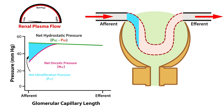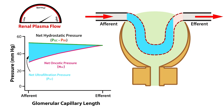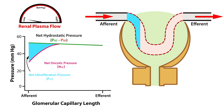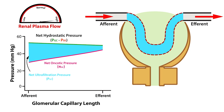Let's pay close attention to what happens to net ultrafiltration pressure, net hydrostatic pressure, and net oncotic pressure as we increase the renal plasma flow in a stepwise manner. From this example, we see that stepwise increases in renal plasma flow result in stepwise increases in net ultrafiltration pressure, which is entirely due to stepwise decreases in net oncotic pressure. Furthermore, notice how when renal plasma flow increases, a larger portion of the glomerular capillaries are used for filtration. This is entirely due to increases in the filtration fraction associated with decreased renal plasma flow.